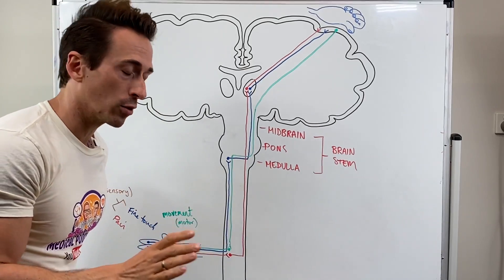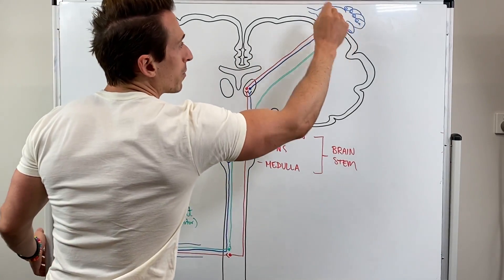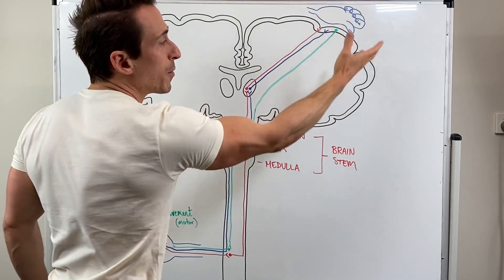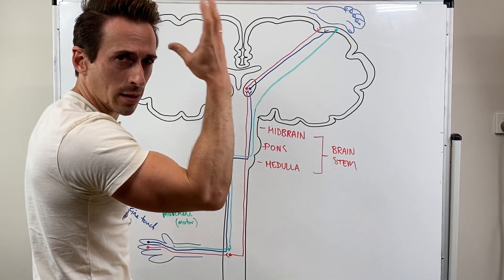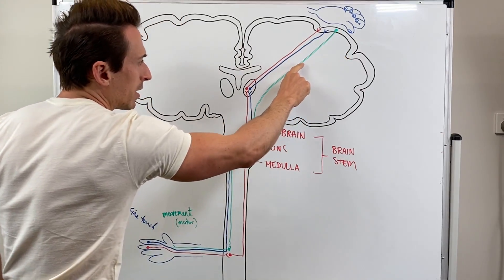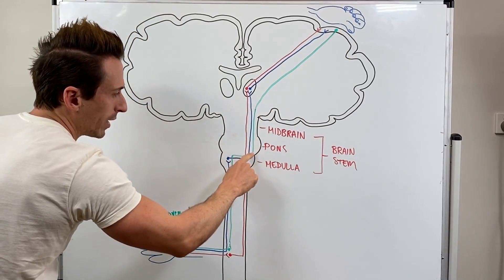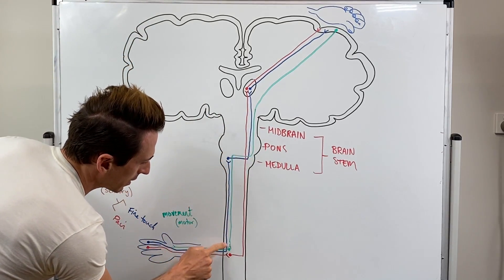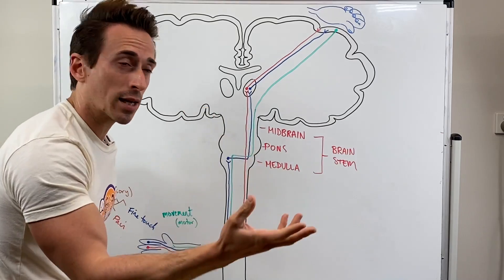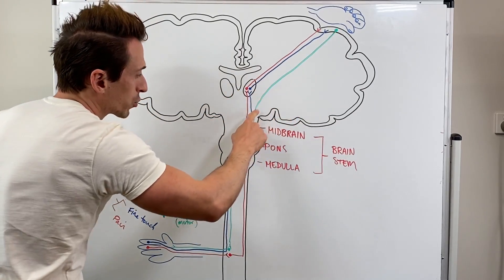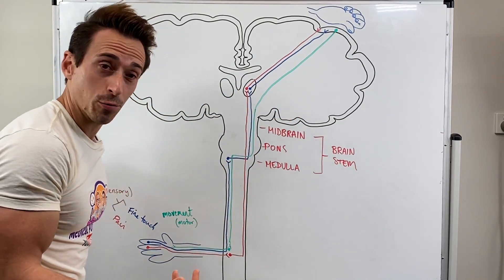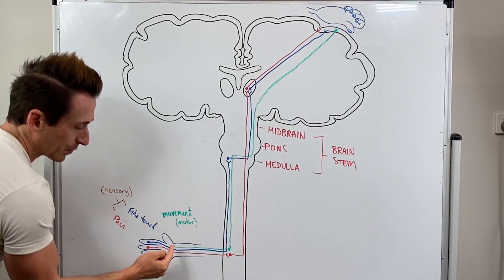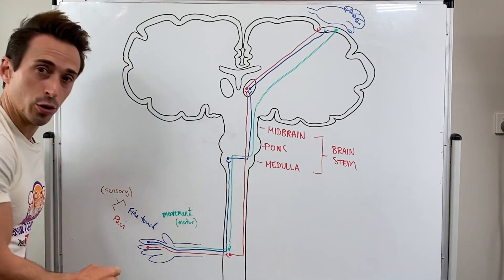Now let's talk about the motor signal. Let's say I want to move that hand. It's going to go from the motor cortex — not the sensory cortex — from the part of the brain that deals with the hand. That signal travels down, and when it hits the brain stem it crosses to the other side. It continues down as one neuron — the upper motor neuron — and at the level where it exits, it synapses with the second neuron, which exits down the arm to the hand so you can move it. That's the lower motor neuron.